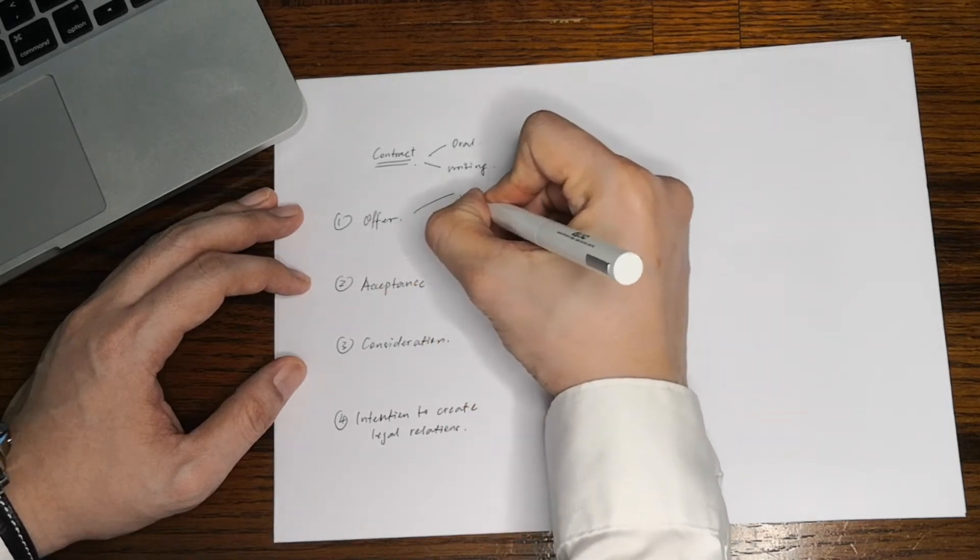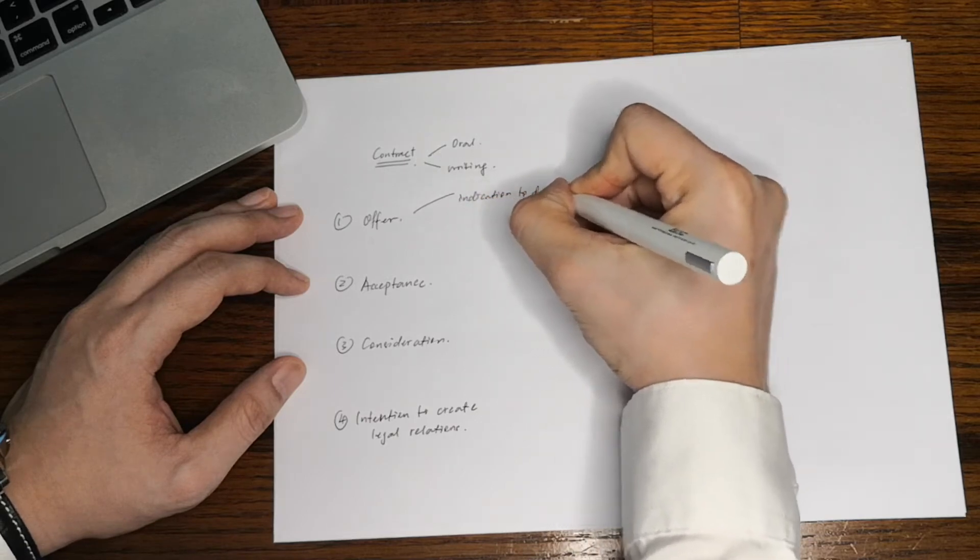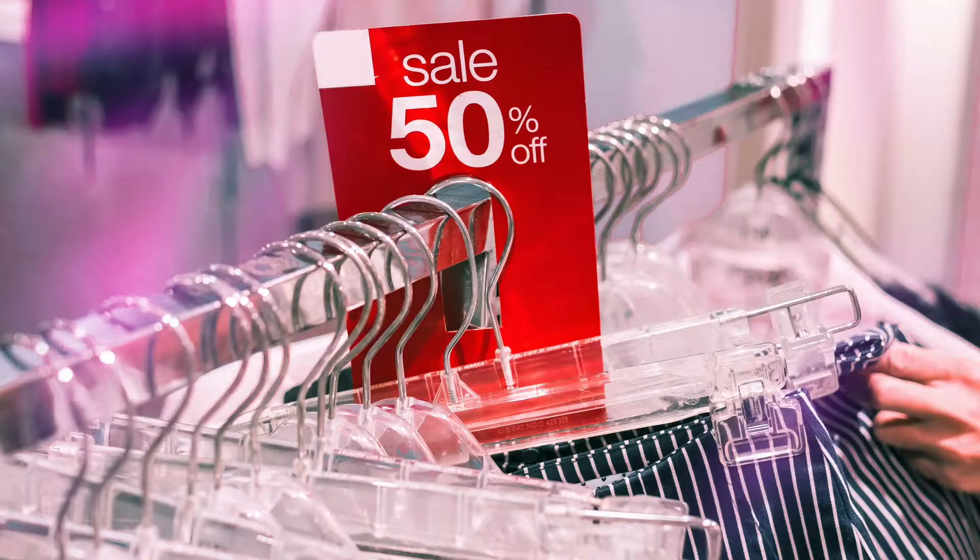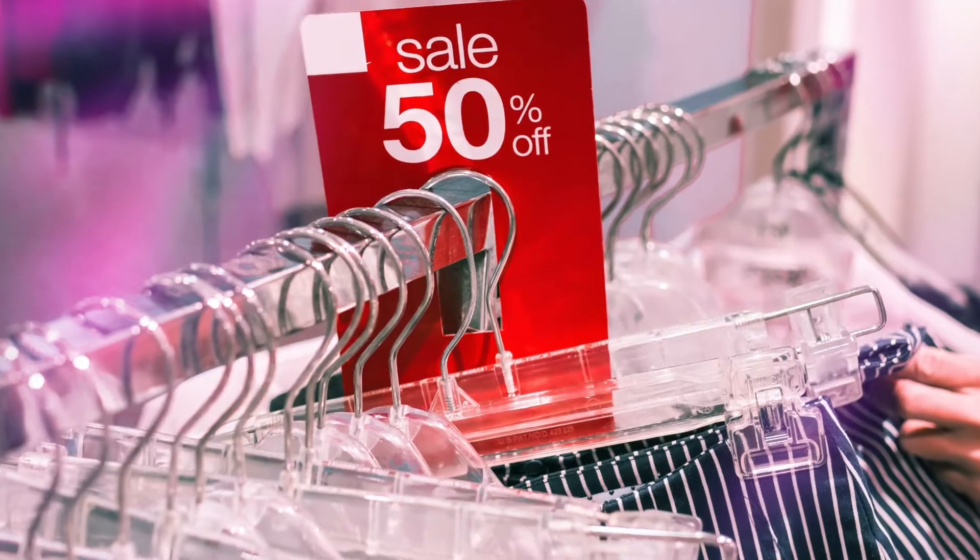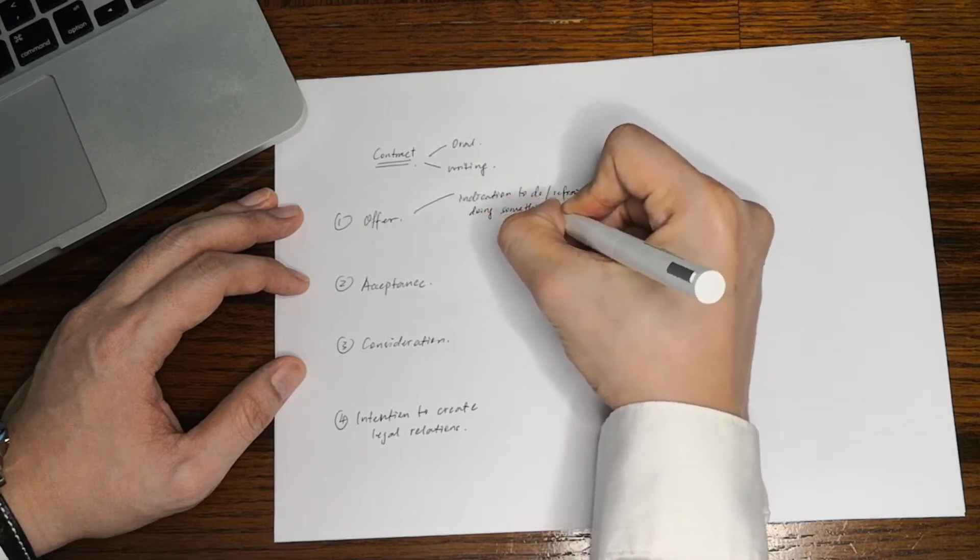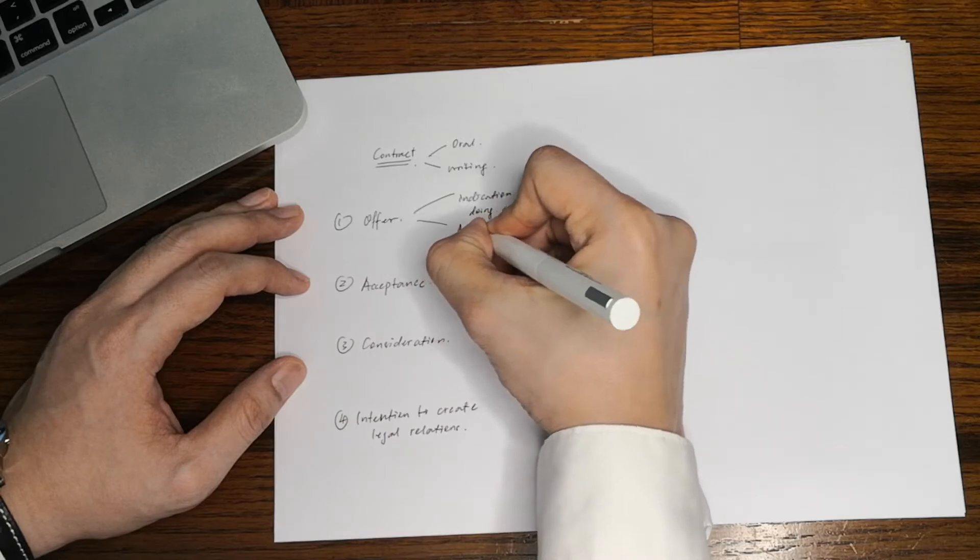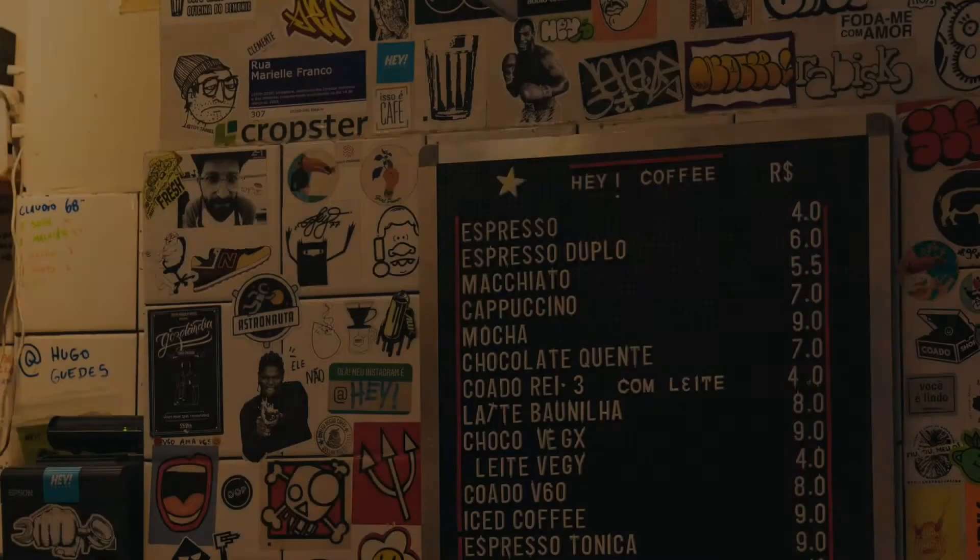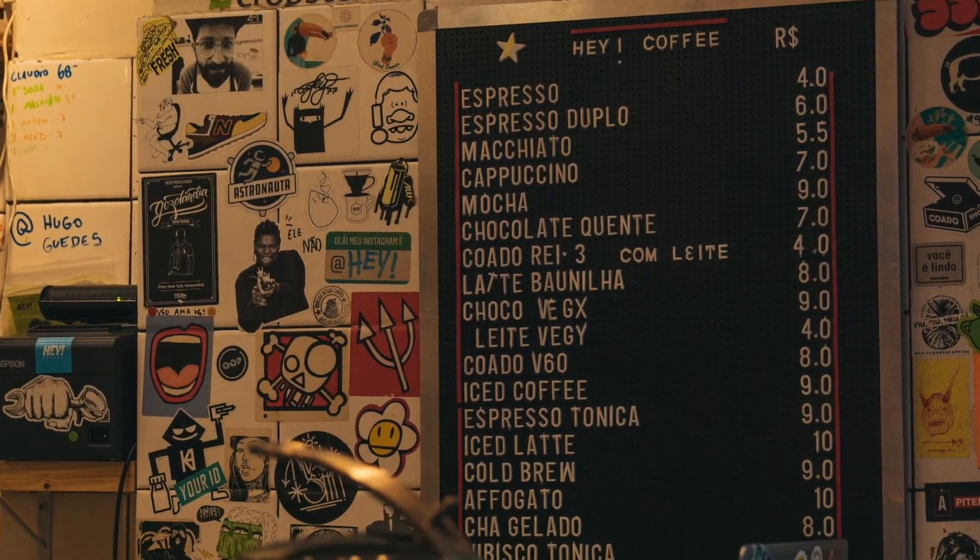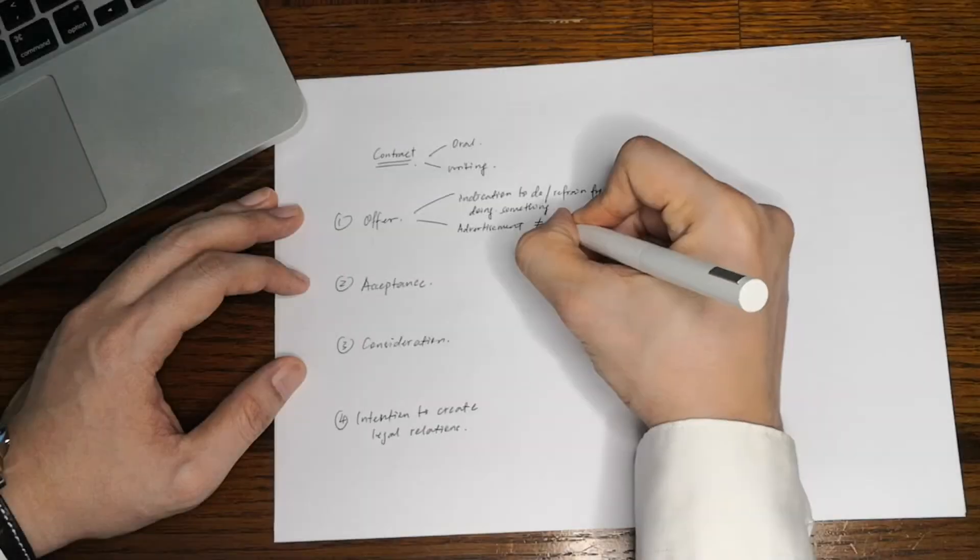An advertisement or a display of goods is not an offer. It is simply an invitation to treat. In such a situation, an offer will only exist when one chooses to make a purchase premise on the conditions as stated in the advertisement, say 20 ringgit for an americano. The seller can then choose either to accept or reject the offer.